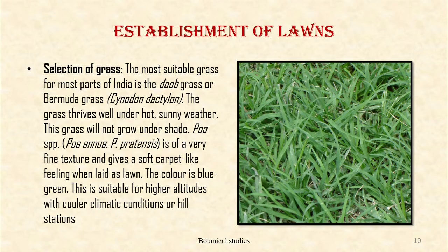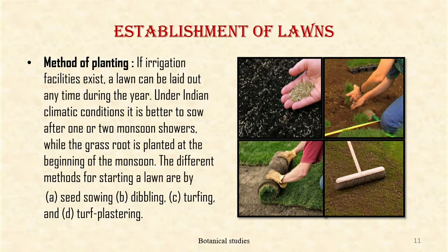Selection of grass: The most suitable grass for most parts of India is the Doob grass or Bermuda grass, i.e. Cynodon dactylon. The grass thrives well under hot sunny weather and will not grow under shade. Poa species is of a very fine texture and gives a soft carpet-like feeling when laid as a lawn. The color is blue-green. This is suitable for higher altitudes with cooler climatic conditions or hill stations.